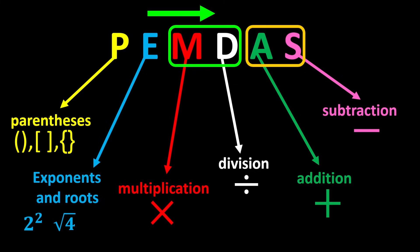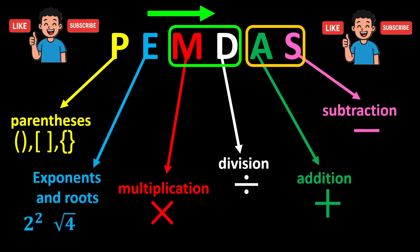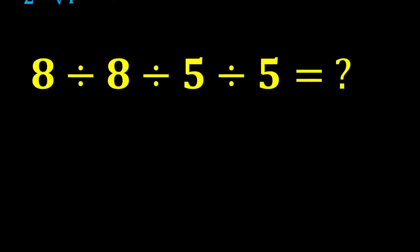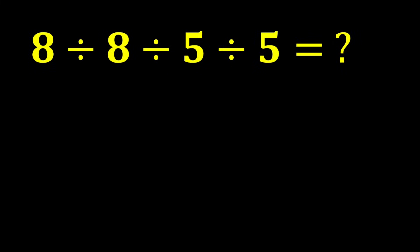But before solving it, please like the video and subscribe to the channel. If you have any questions, ask them in the comments. In this expression, there is more than one division, and since divisions have equal priority, we move from left to right and perform the divisions in order.